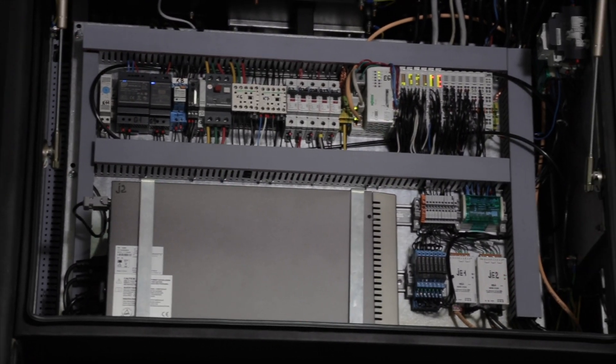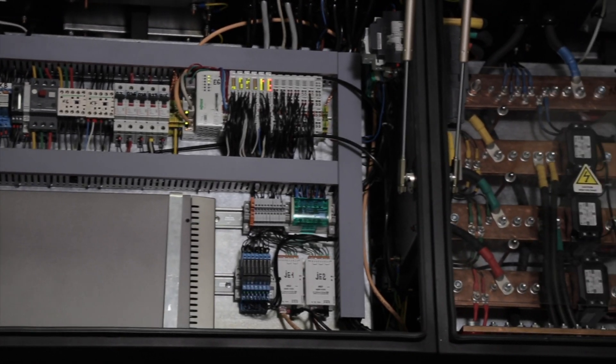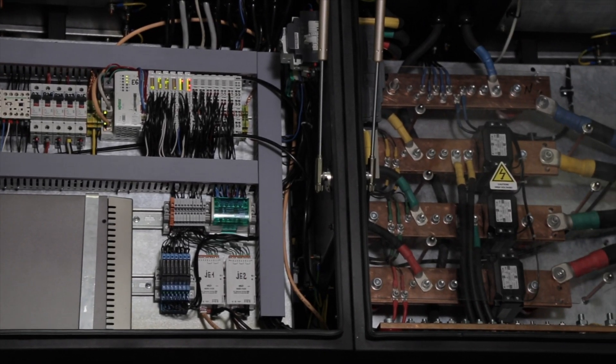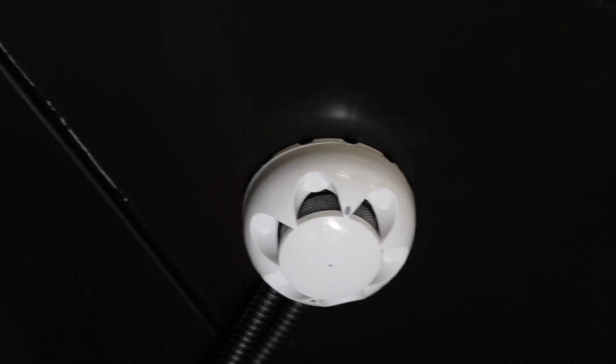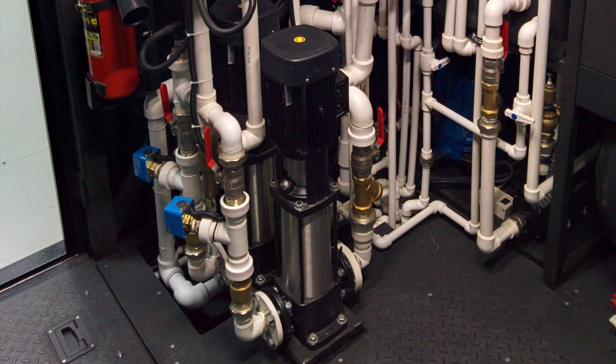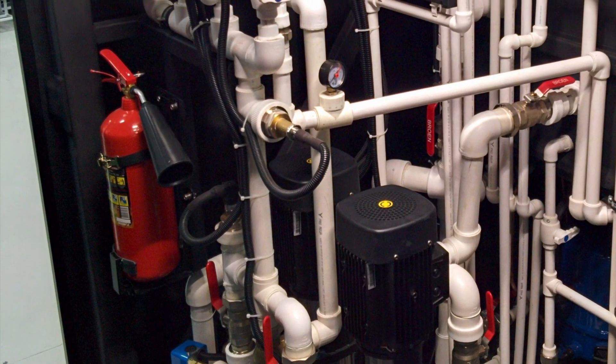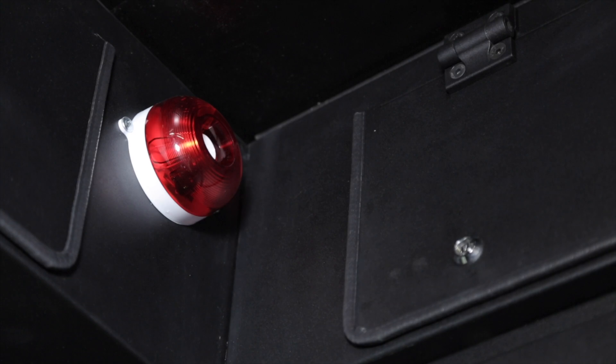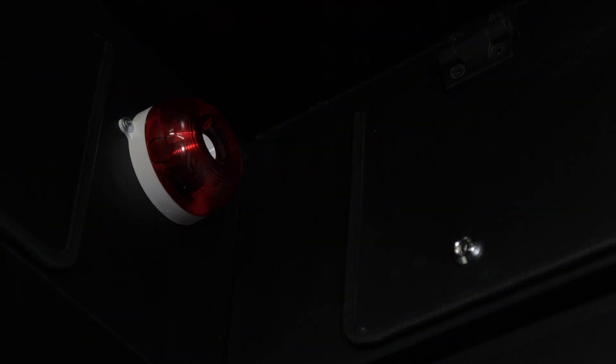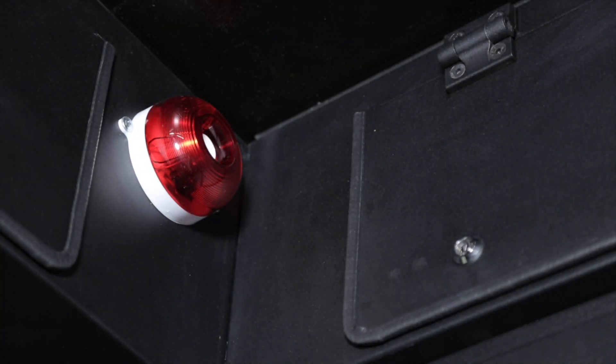All electric cabinets and cable ducts are airtight, have sealing on their doors and airproof inlets and outlets, which allows using an automatic firefighting system in each cabinet and the cable ducts. A safety gas-based firefighting system is used in the container. A fire alarm system and primary firefighting means are also provided in the module.